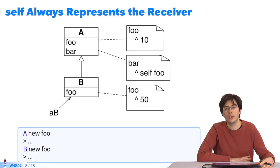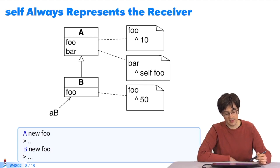Self always represents the receiver. The following examples will make it clear to you that the lookup algorithm always applies to the receiver self. Here we have an instance of class A. We send the message foo. The lookup algorithm searches for foo, finds it, and executes it.